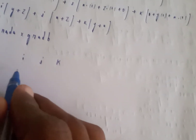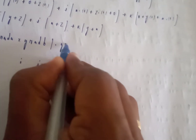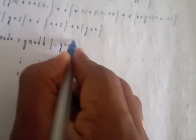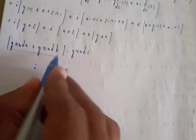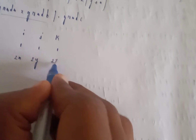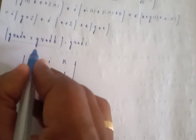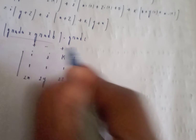Now set up the scalar triple product. Grad a is (1, 1, 1), grad b is (2x, 2y, 2z). Compute grad a cross grad b using the determinant formula with i, j, k. The signs are plus, minus, plus. Plus i of (ad minus bc).